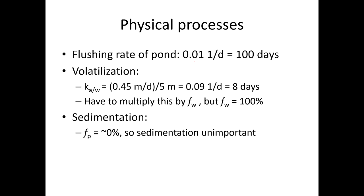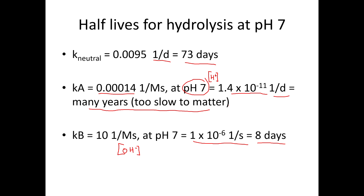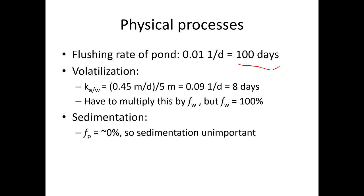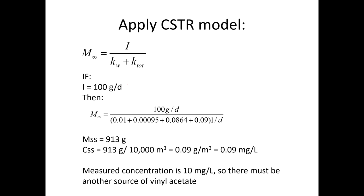For physical processes: the flushing rate K_W = Q/V = 0.01 per day, characteristic time 100 days. Volatilization: 0.45 m/day ÷ 5 m depth = K_vol = 0.09 per day, characteristic time about 8 days. Since vinyl acetate has log K_OW of 0.73, it's essentially 100% dissolved, so we multiply K_vol by ~1. Sedimentation is negligible since the particle fraction is essentially zero. So sedimentation can be ignored.